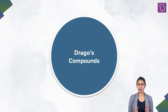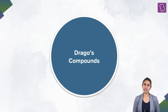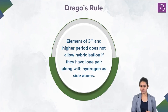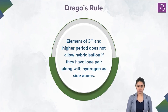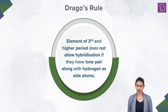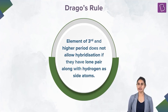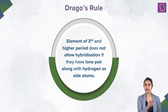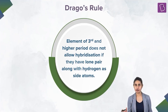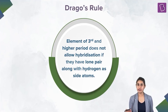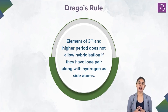It's very simple — super simple. Nothing Draconian about it, nothing complicated. All we need to do is look at the rule and see what it says. Drago's rules state in simple terms that an element of the third and higher period does not allow hybridization if it has a lone pair along with hydrogen as the side atom — or basically any side atom with electronegativity less than or equal to 2.5.